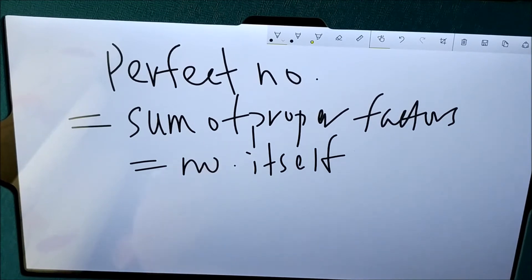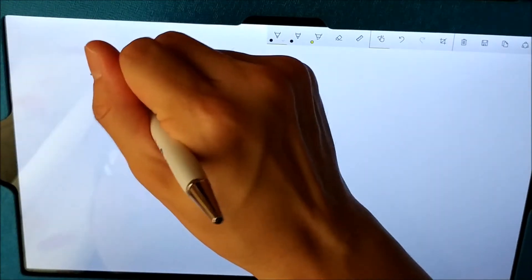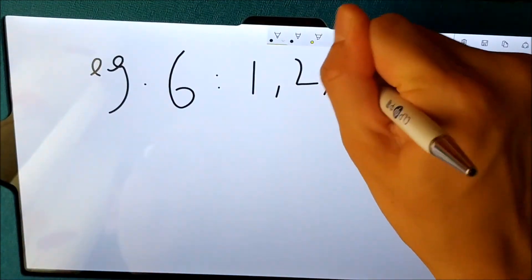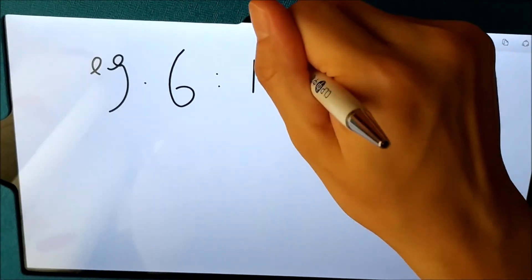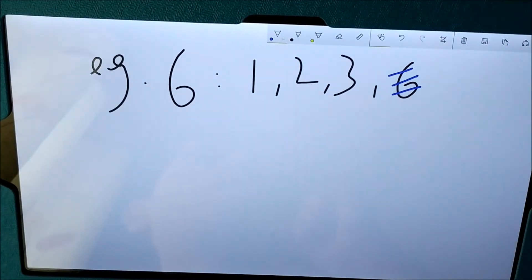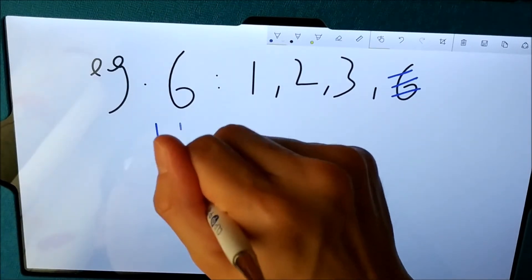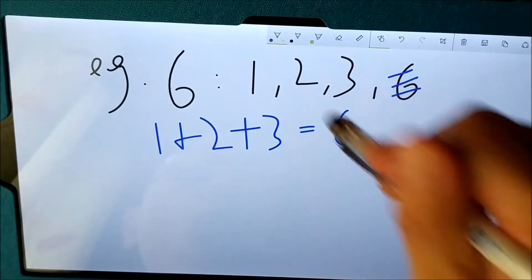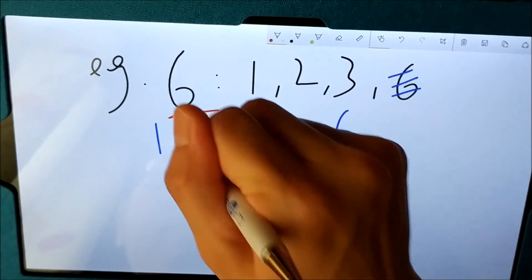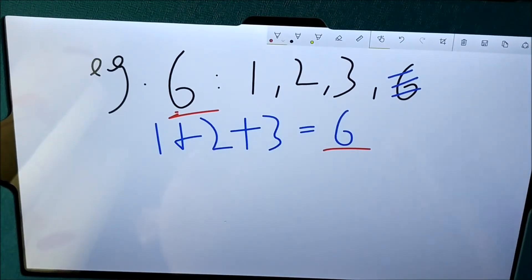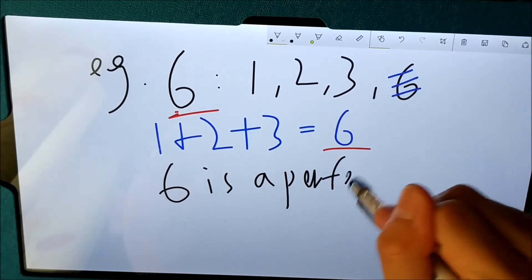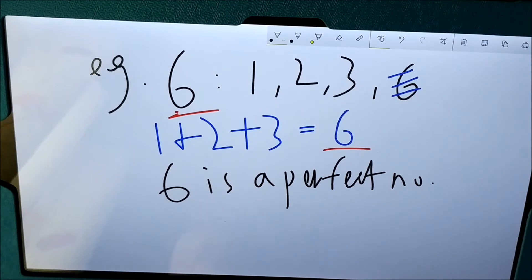You may not understand what I'm talking about, so I'll simply take an example. For example, I take a very small number 6. You can see that the number 6 has factors 1, 2, 3, and 6. Now because we are talking about proper factors, we cancel the number 6 itself. Then you can verify that when we add 1 and 2 and 3 together, you get 6, which is equal to the number itself. So we will say the number 6 is a perfect number, because the sum of its proper factors equals itself.